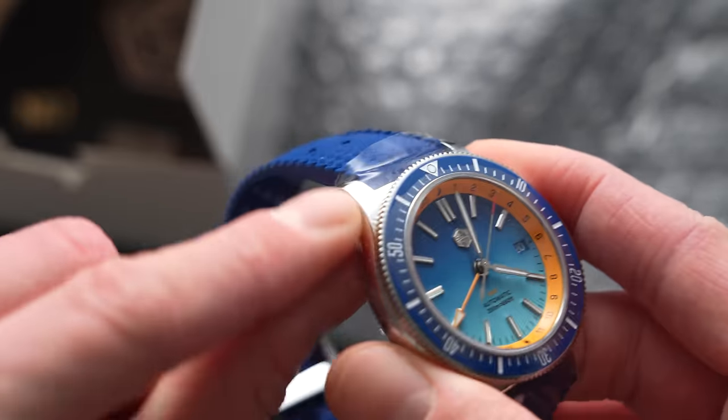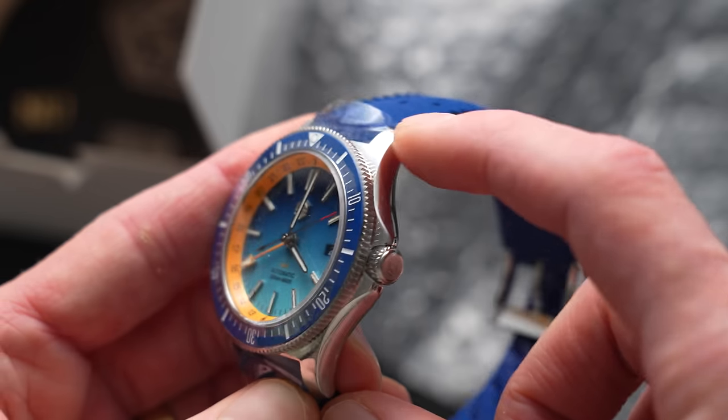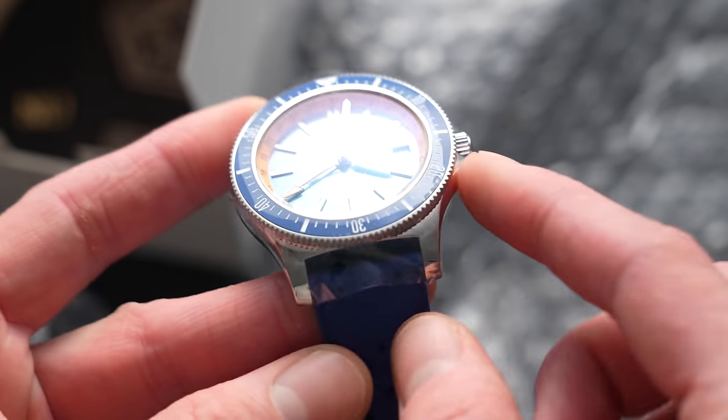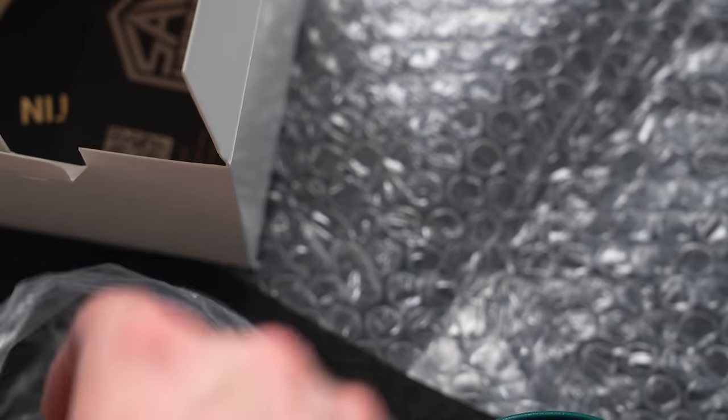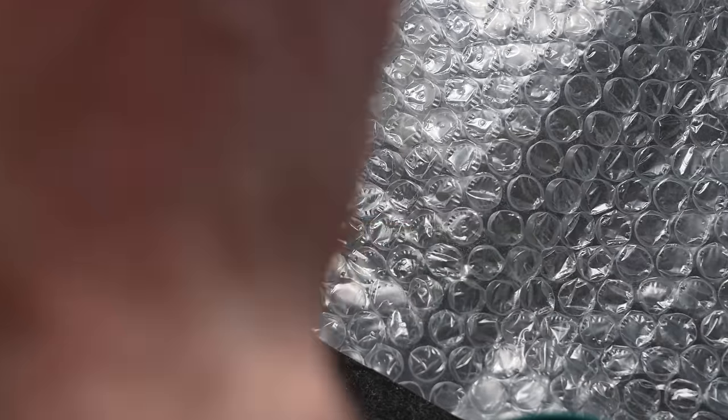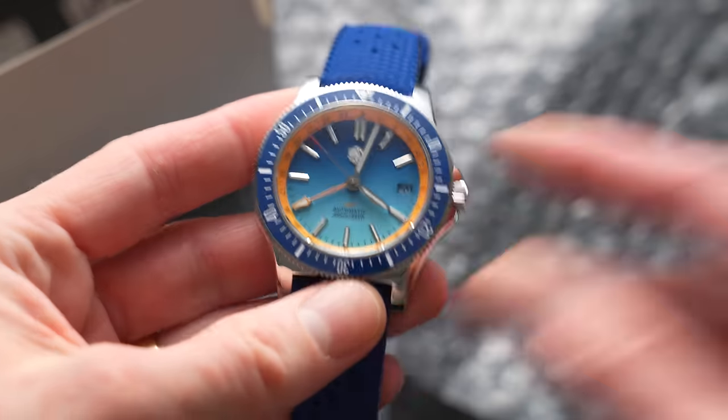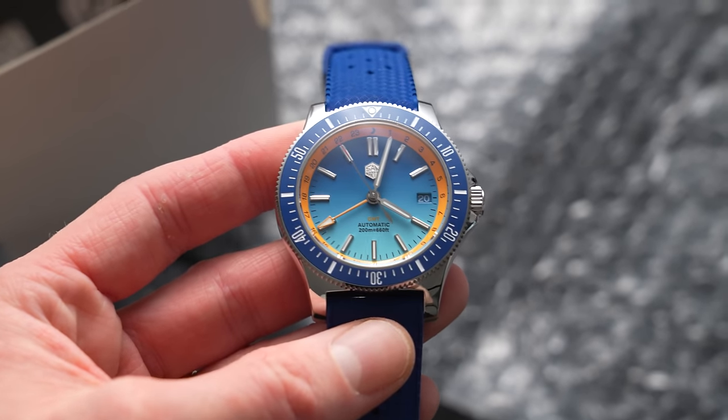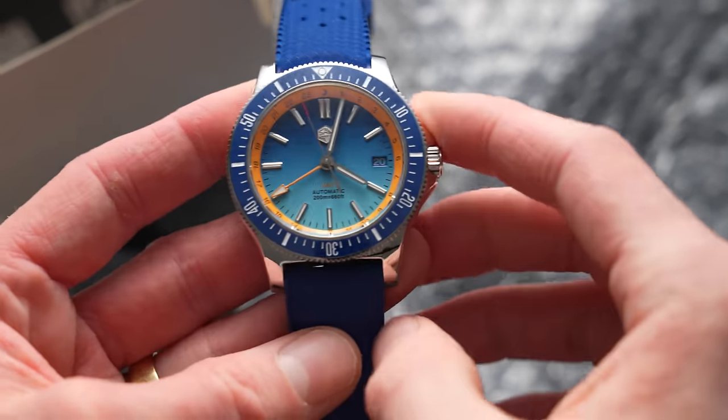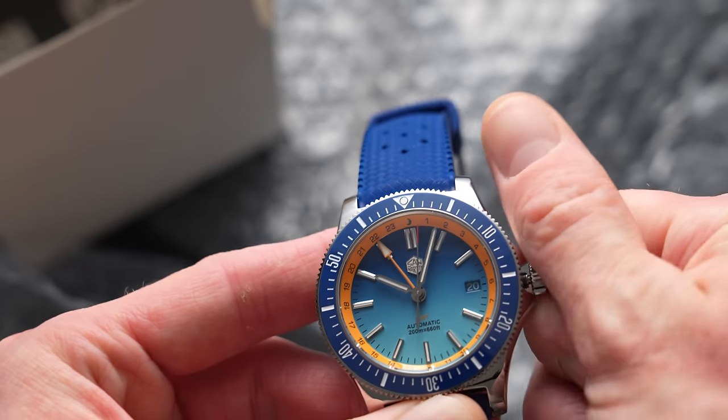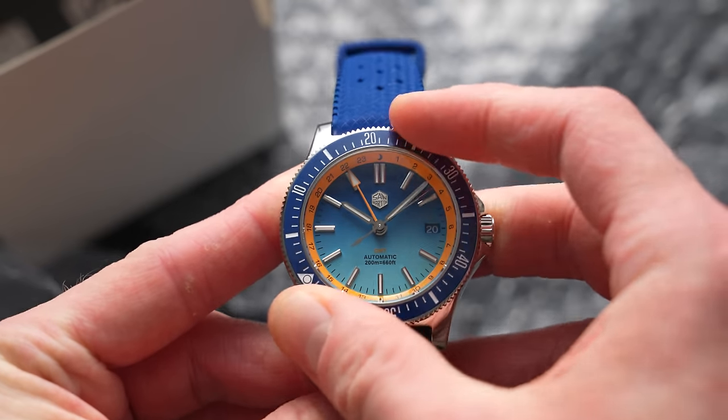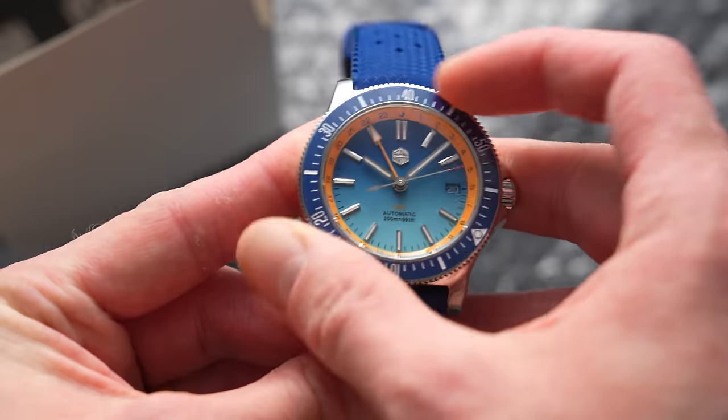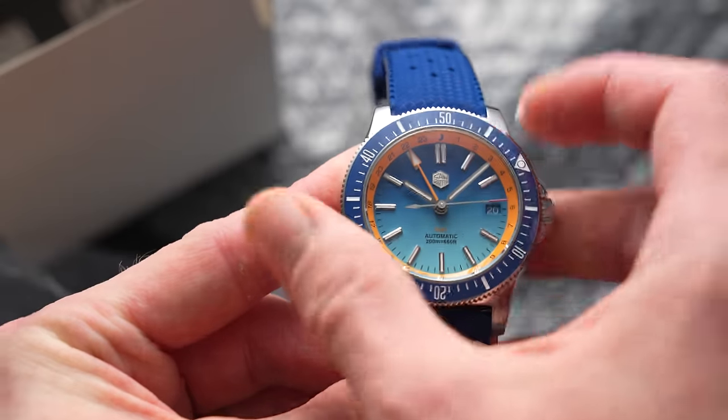The lugs and case here really remind me of the Citizen Promaster that I reviewed recently. Those lugs are almost identical in terms of shape. Personally, I tend to prefer more reserved color combinations than this normally. Screw-down crown, let's make that look a bit nicer. That's also good. It has got a bit of back play as you can see, but it has got a very satisfying feel, really satisfying. Actual good alignment too, that always helps.